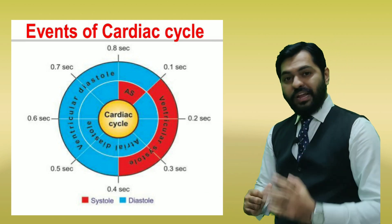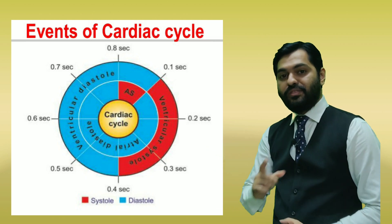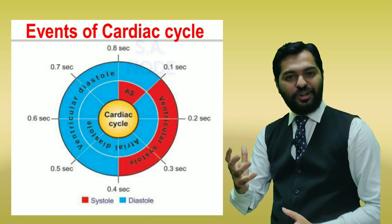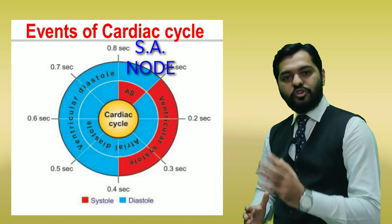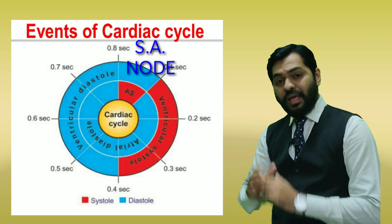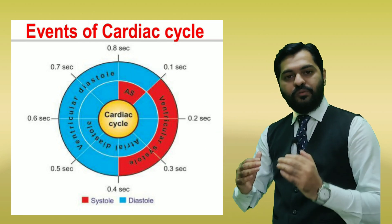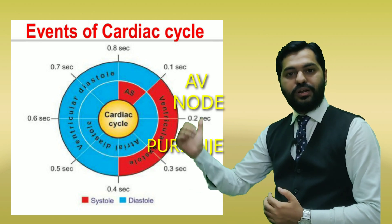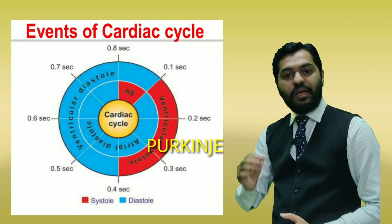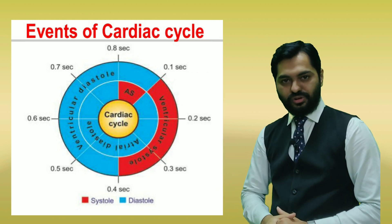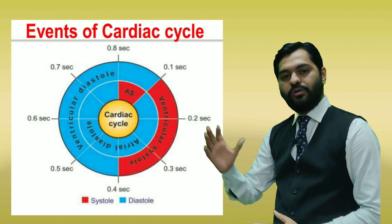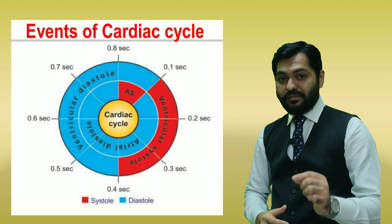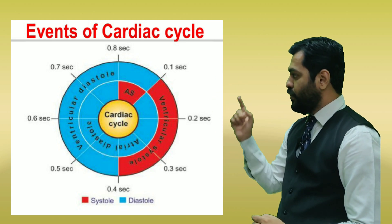The reason for atrial systole is the impulse produced by the SA node, which is the pacemaker of the heart, as discussed in the conducting system. Ventricular systole is caused by the impulse conducted by the AV node up to the Purkinje fibers. Joint diastole represents repolarization, which is responsible for the relaxation or diastolic phase.